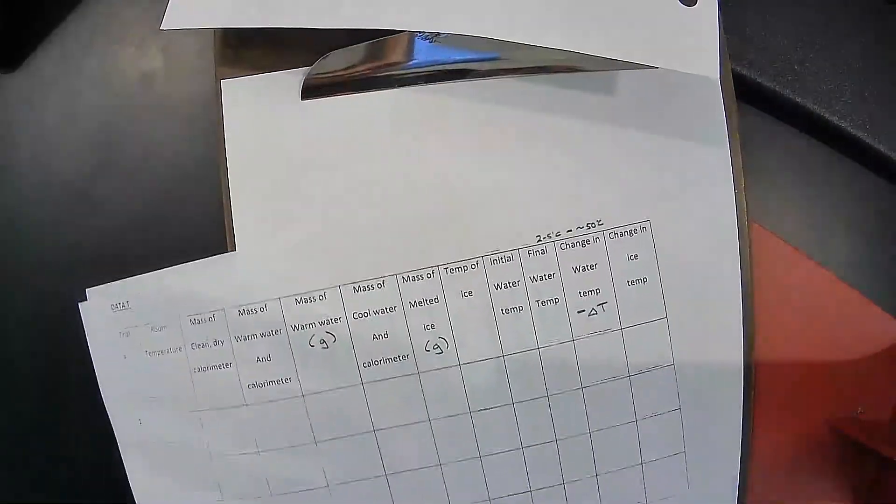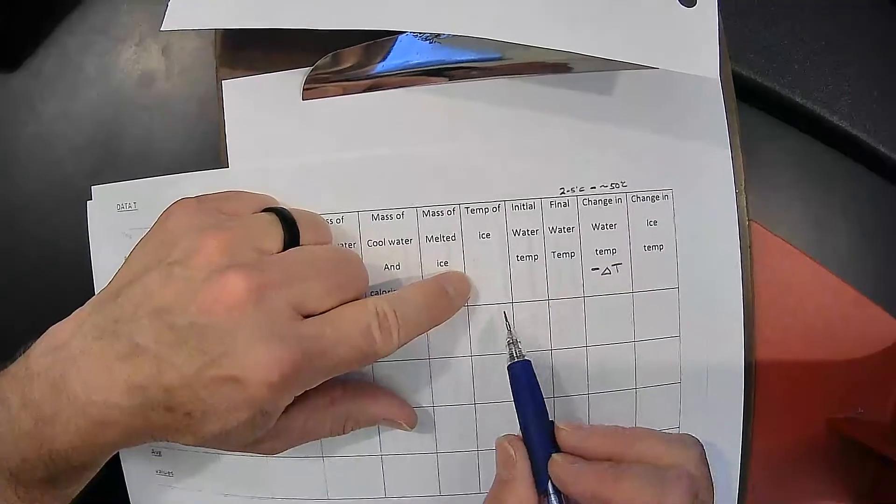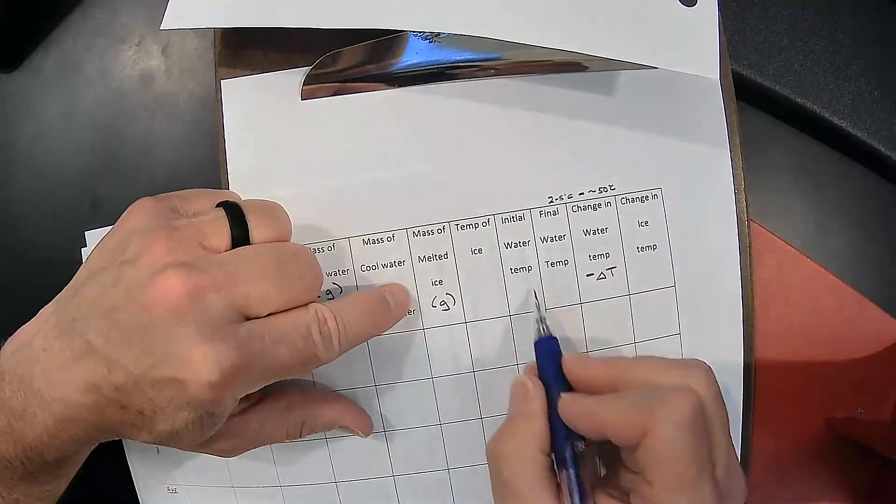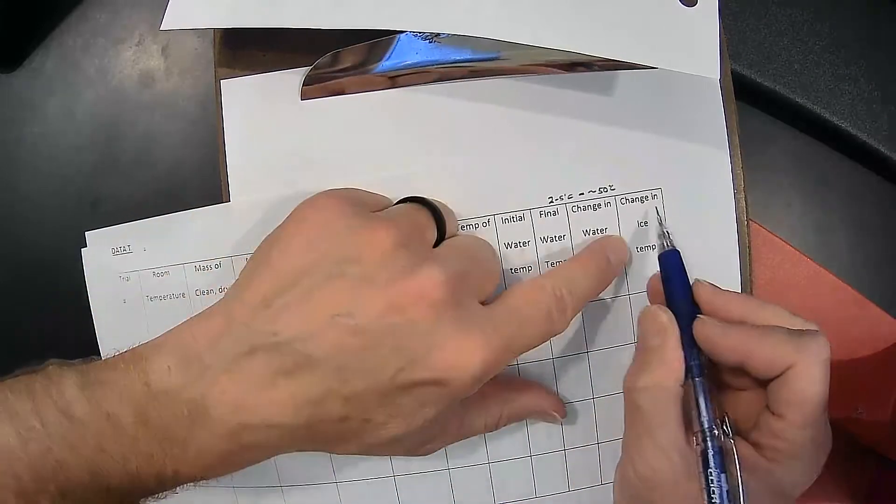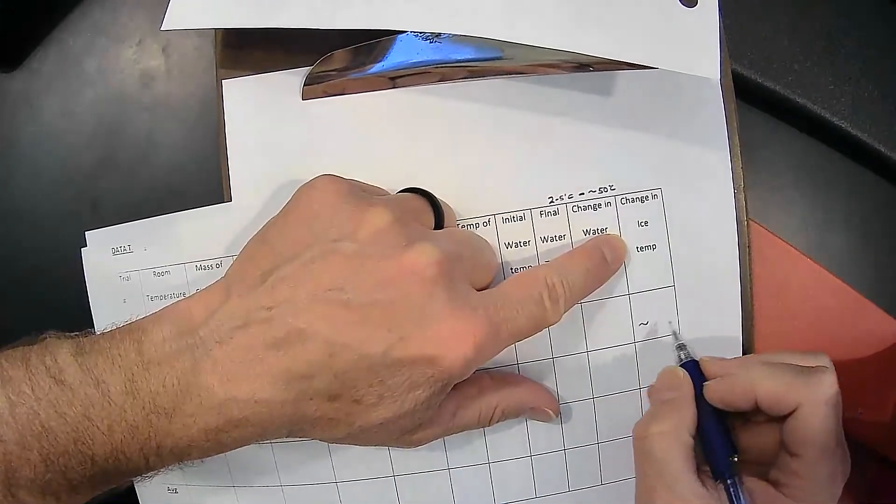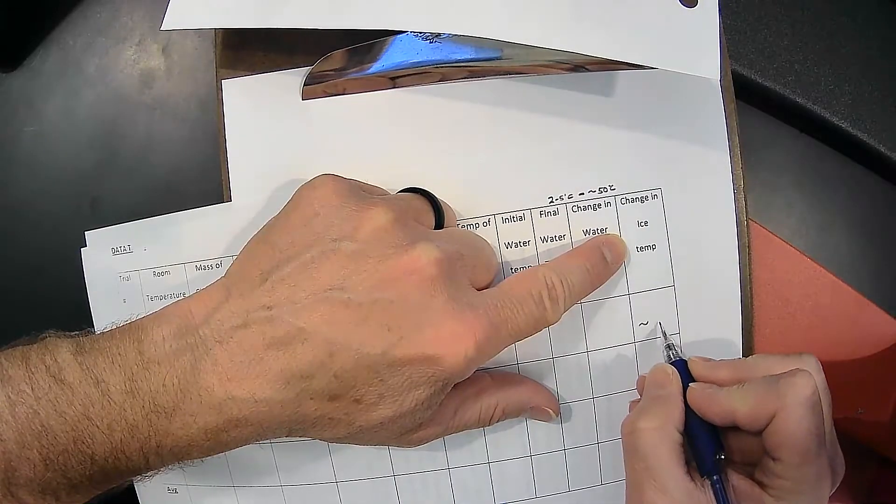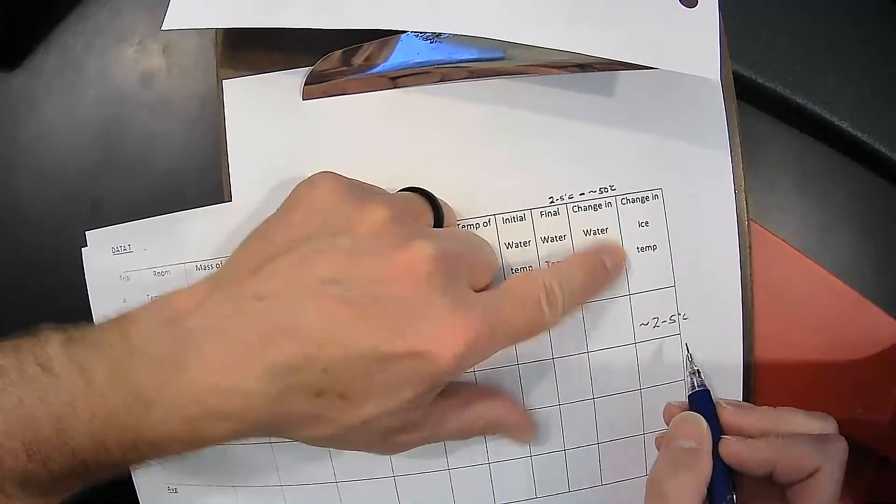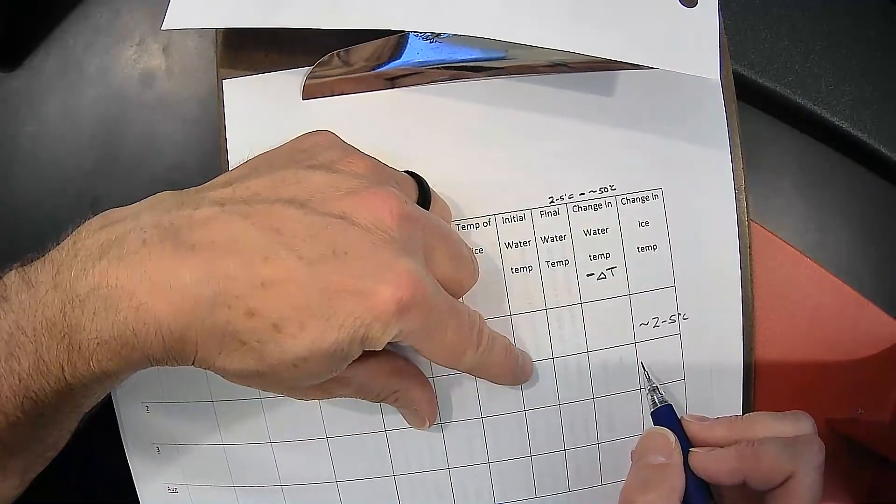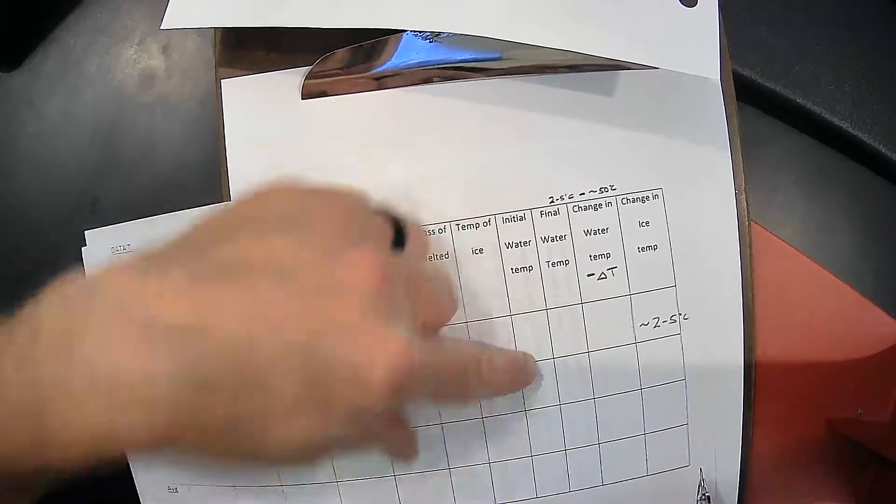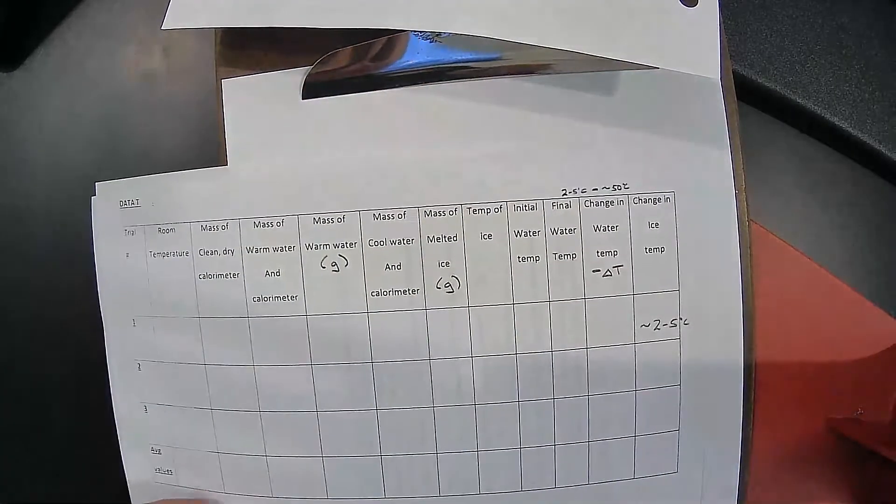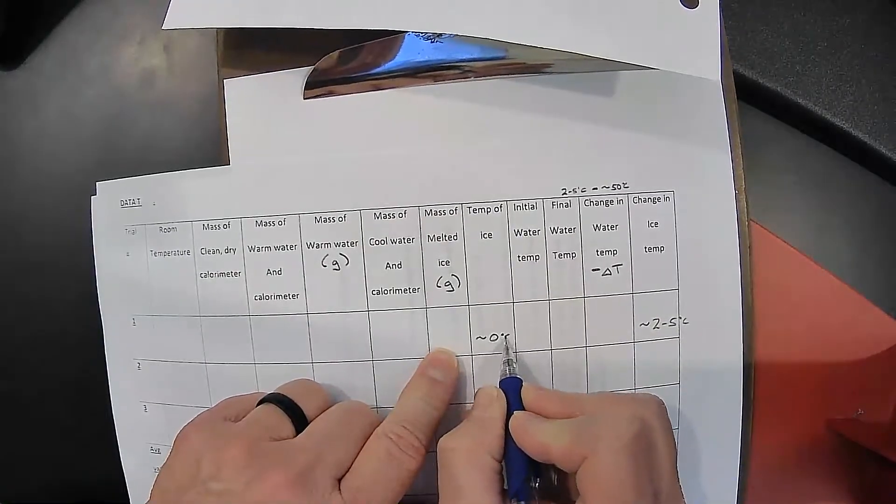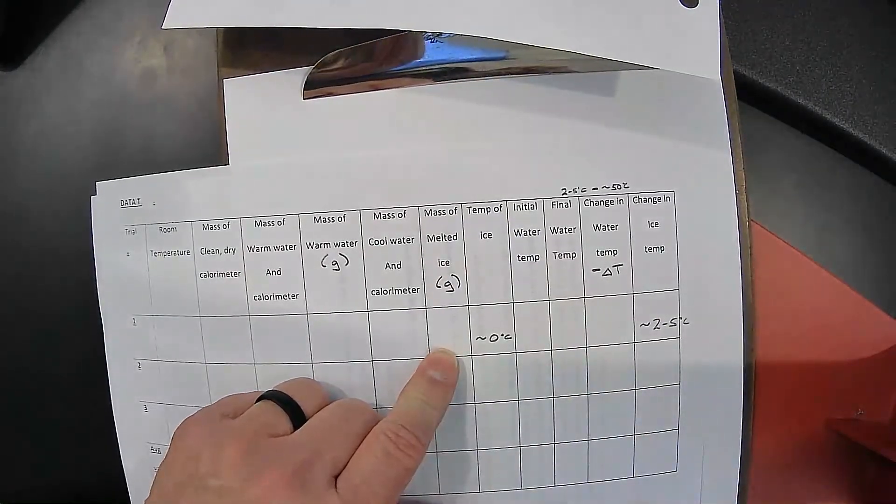Remember, we're talking about the ice that melted. So the ice melted at 0 degrees Celsius. You have an approximate final temperature between 2 and 5 degrees. Remember that that ice started at 0 degrees Celsius where it's melting. So use the temp of the ice. It's going to be approximately 0 degrees Celsius.